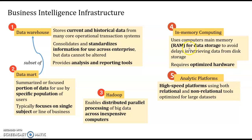The infrastructure for business intelligence includes: first, a data warehouse, which stores current and historical data, consolidates and standardizes information for use across the enterprise, but data cannot be altered once stored. It also provides analysis and reporting tools. The smaller version is called a data mart — it is a subset, summarized or focused on a portion of data for a single subject or line of business.